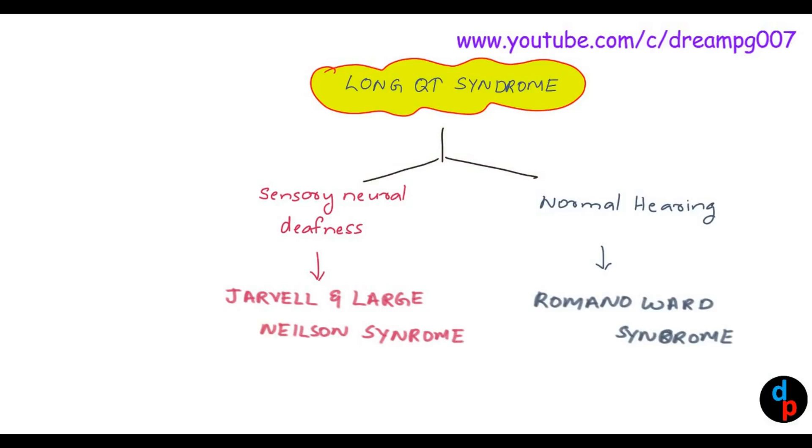Jervell-Lange-Nielsen syndrome is an autosomal recessive condition, whereas Romano-Ward syndrome is an autosomal dominant condition.